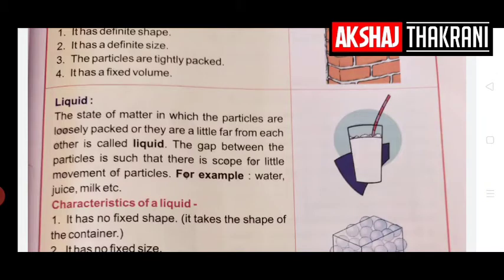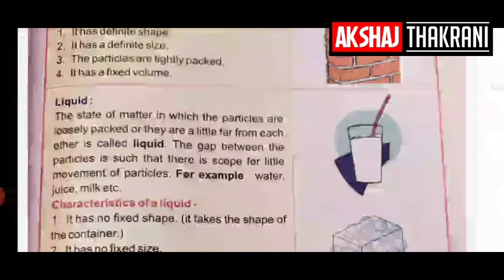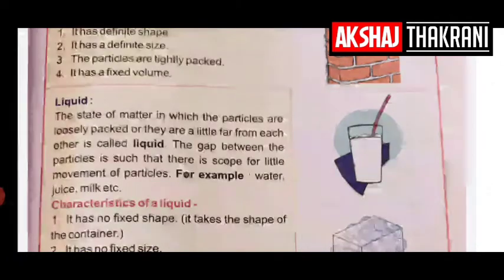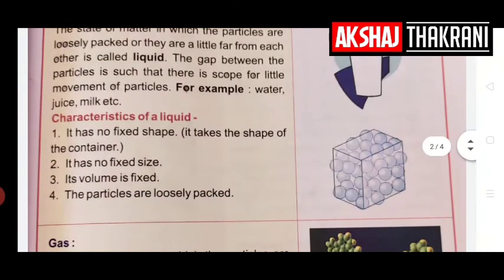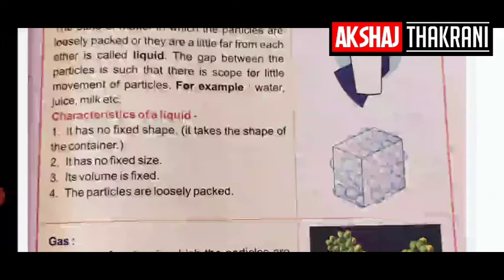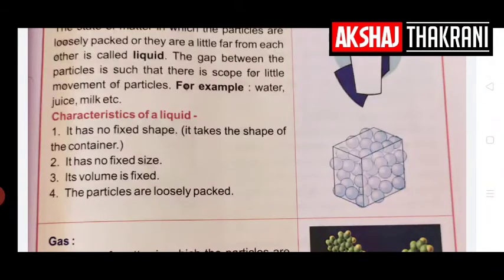The second state is liquid. Examples include water, juice, milk, petrol, and syrup. The state of matter in which the particles are loosely packed — a little far from each other — is called liquid. There is enough gap between particles for a little movement. Liquids have no fixed shape — they take the shape of the container — and no fixed size, but they have a fixed volume.